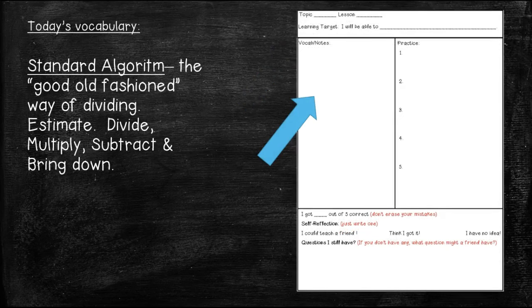So what is a standard algorithm anyway? Well, that is just a fancy word for the good old-fashioned way of dividing. Remember, we've talked about this before. First you estimate, then you divide, multiply, subtract, and bring down.